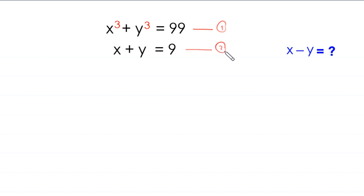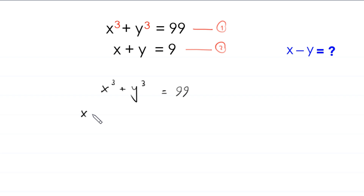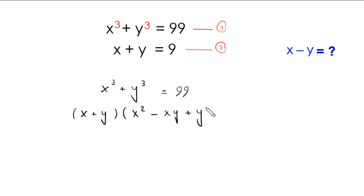We start from equation one: x cubed plus y cubed is equal to 99. This x cubed plus y cubed can be factorized as x plus y, times x squared minus xy plus y squared, is equal to 99. Now in this equation we replace x plus y with the value 9 from equation two.